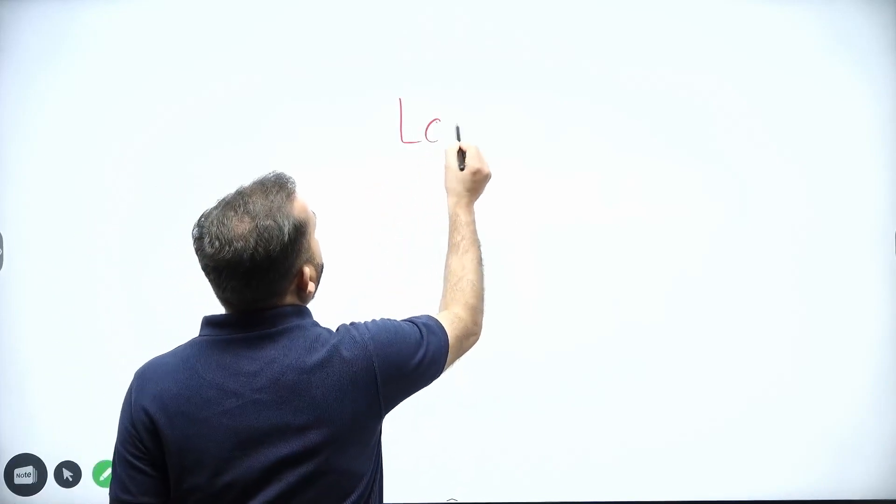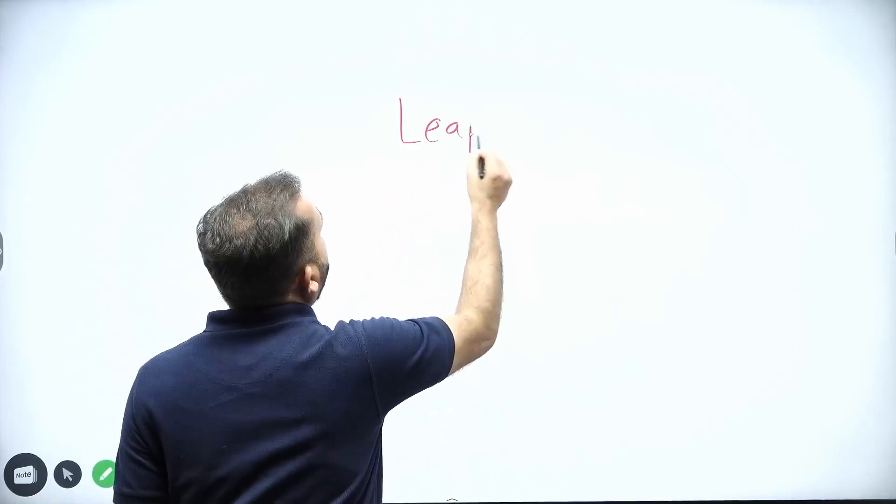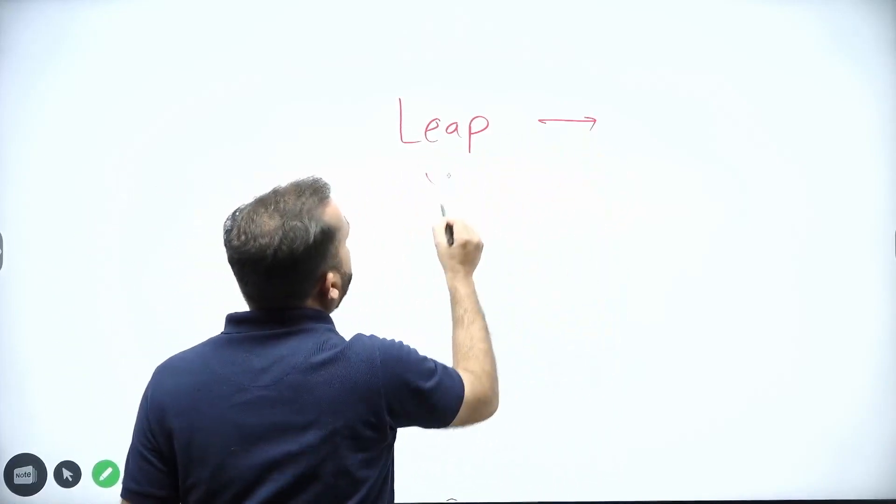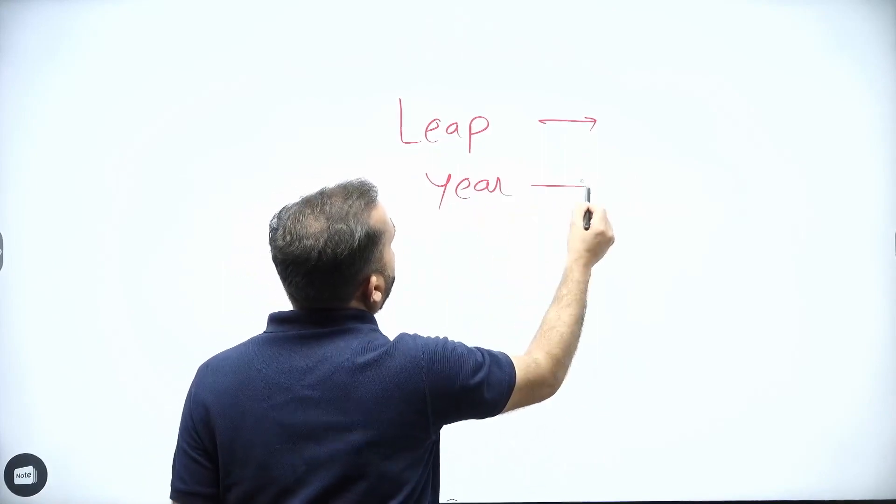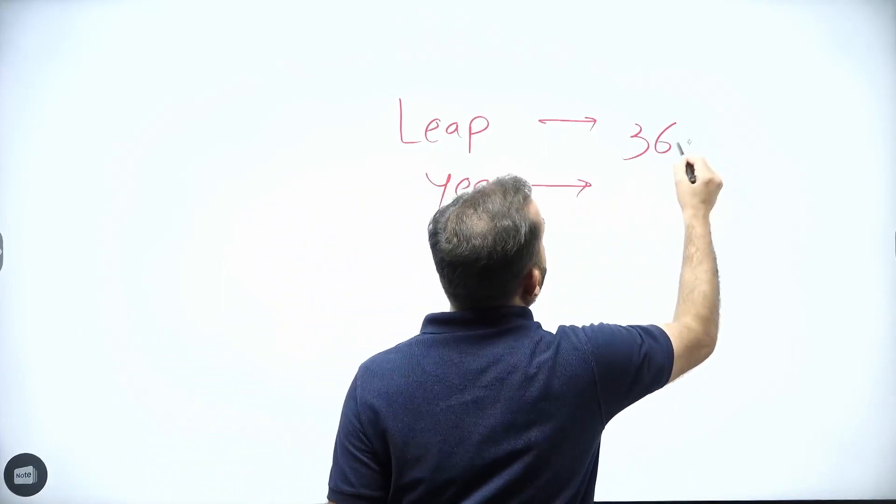The answer is pretty obvious — a year containing 365 days is not a leap year, and if there are 366 days in a year, then that year is a leap year. This is what we know about leap year. A leap year contains 366 days.